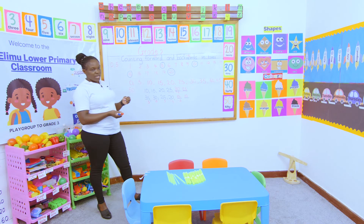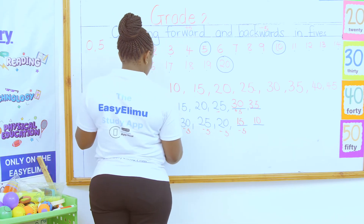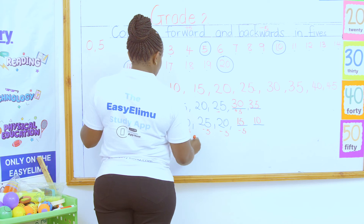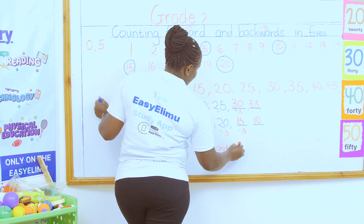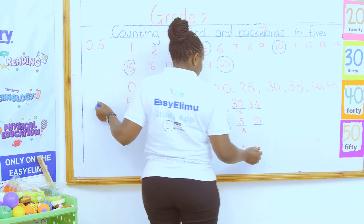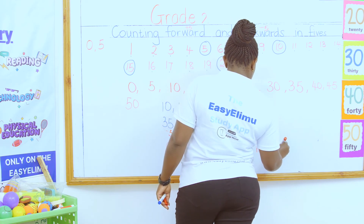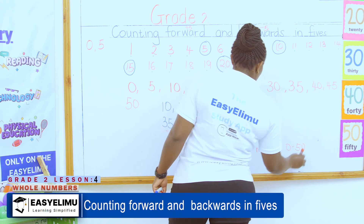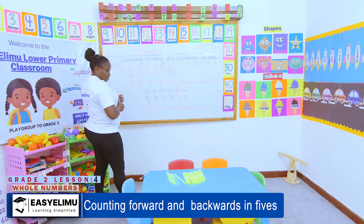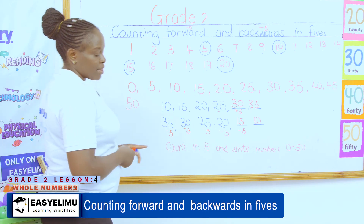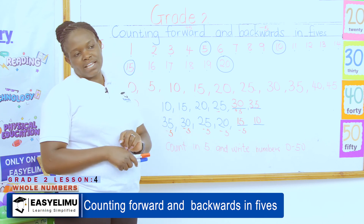From here, you are going to write for me numbers you count in fives. Write numbers between 0 and 50, and tell me how many numbers we have between 0 and 50 when you count in fives. Are we together? Any questions? It was nice having you around, and I look forward to seeing you in the next lesson. Thank you.